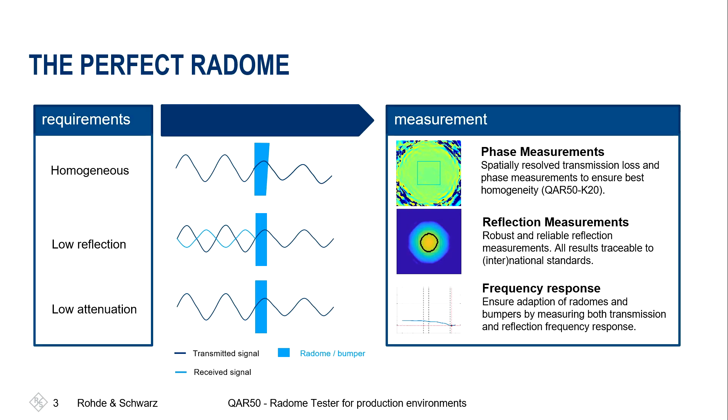For low reflectivity, we also directly measure the reflection with the QAR50. The same applies for attenuation — we measure the attenuation and also the frequency response. This means you can verify that the adaptation of the radome to the specific frequency of the radar is ensured throughout the entire production process.